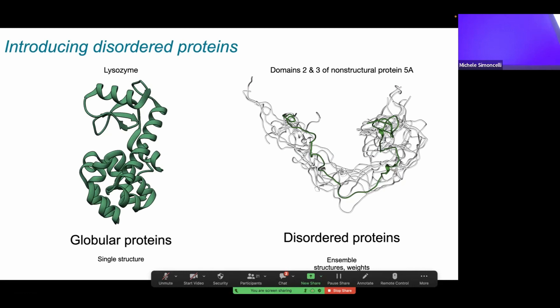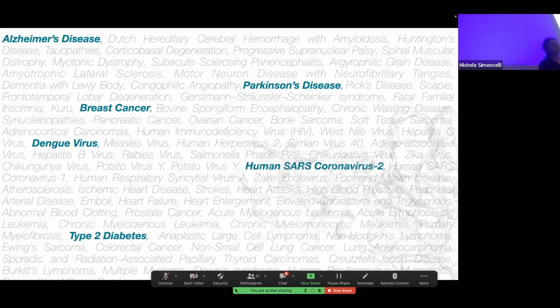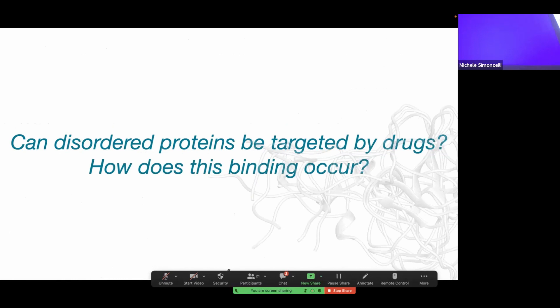But when things go wrong with these proteins, they can go very wrong. We find intrinsically disordered proteins involved in a wide variety of diseases, including all of the ones listed here, several of which are extremely prevalent for our society today. The focus of my research is trying to understand how we can target intrinsically disordered proteins therapeutically with small molecules, because this represents an enormous untapped therapeutic opportunity. To get at this question, I break down my research into two more specific questions: can disordered proteins be targeted by small molecules or drugs? And if so, how does this binding occur?